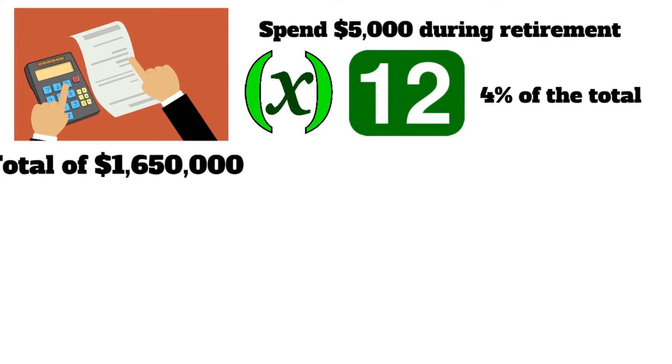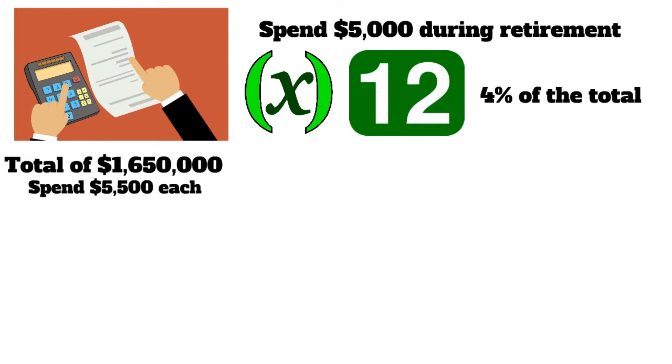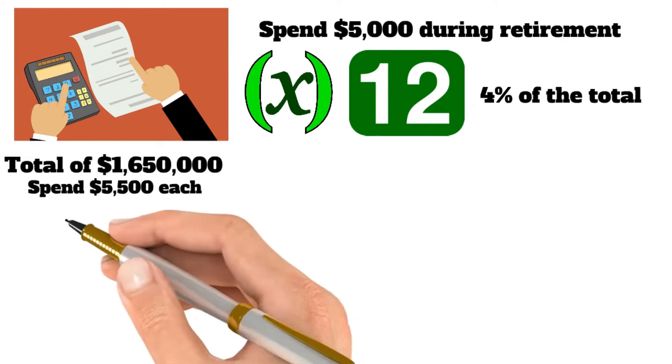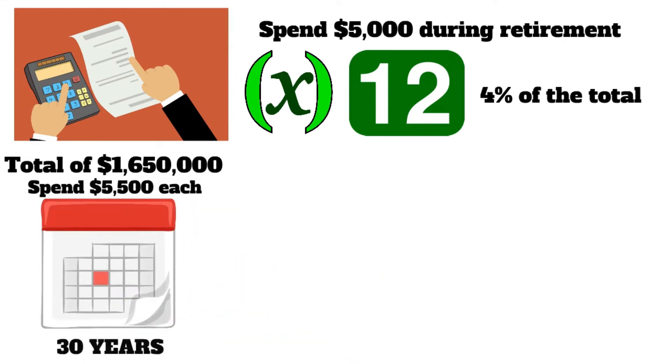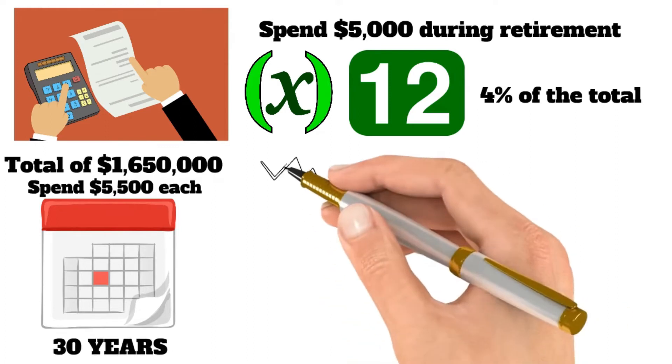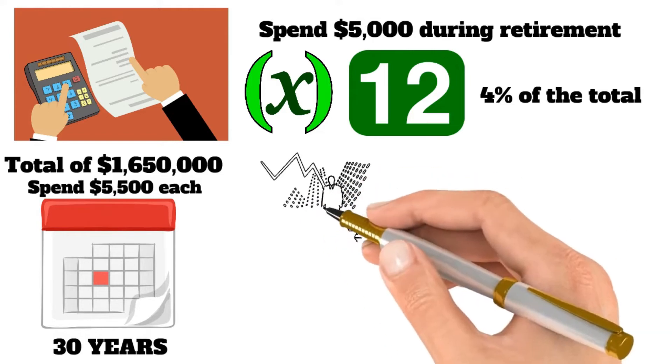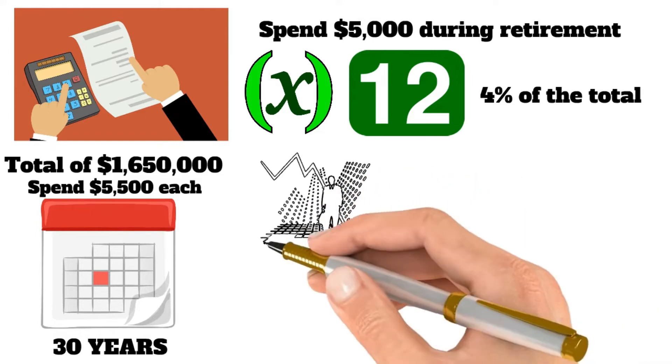If this is the case, having a total of $1,650,000 will provide you with the ability to spend $5,500 each and every month for at least the next 30 years without having to worry about running out of money. Still, if you stop there, inflation will make it hard for you to keep living the same way when you retire.